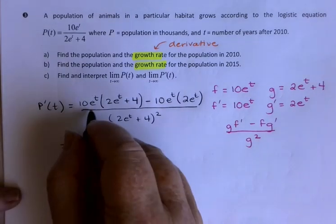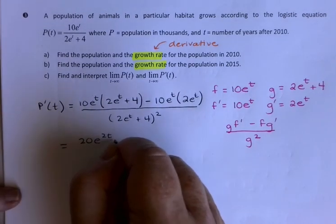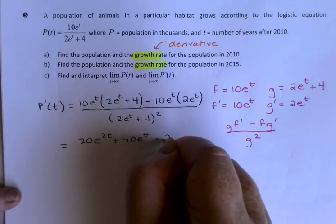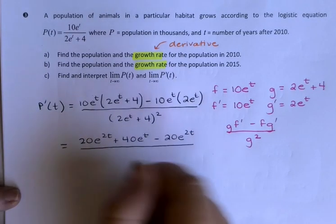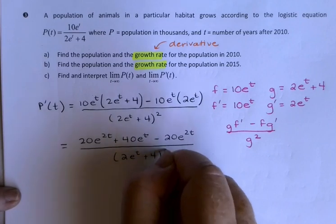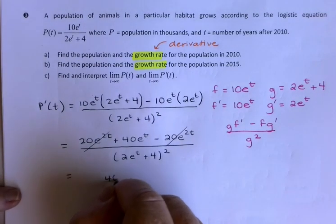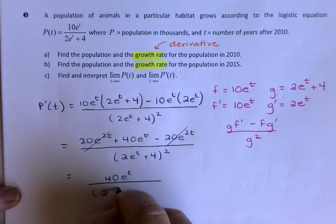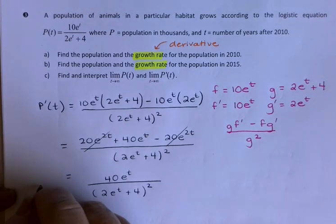Let's simplify that a little bit. I'll distribute, so I'd have 20e^(2t) plus 40e^t minus 20e^(2t), so that was kind of nice, those will cancel out. And I just end up with 40e^t over (2e^t plus 4) squared. So there's my p'.